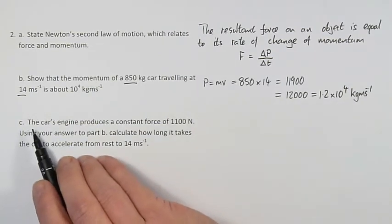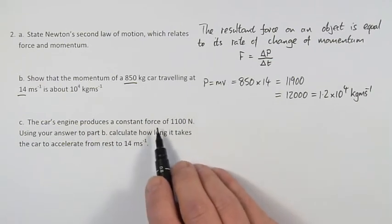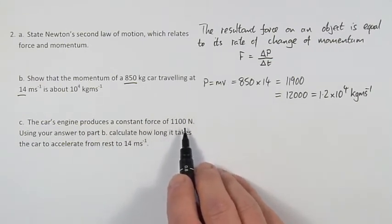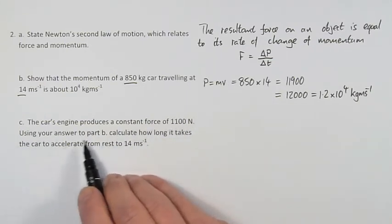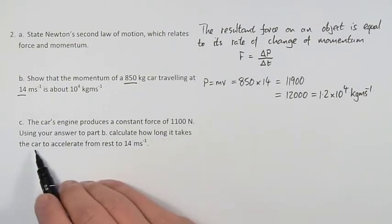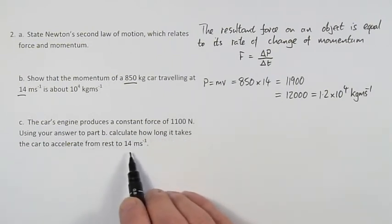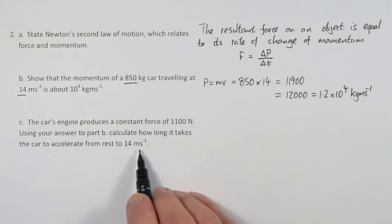Part C. The car's engine produces a constant force of 1100 newtons. Use your answer to part B. Calculate how long it takes the car to accelerate from rest to 14 metres per second.